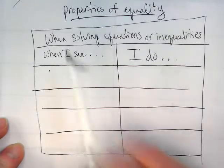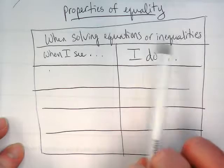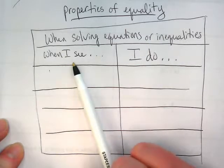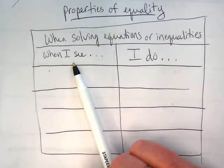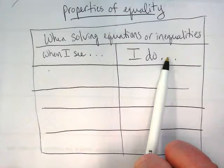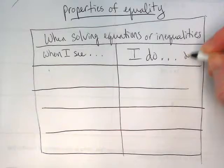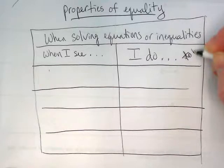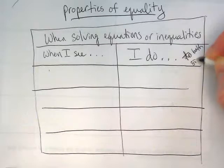As we're talking about properties of equality when solving equations or inequalities, we're going to put on the left side what will be in the equation or inequality, and on the right side we're going to say what we do to both sides.